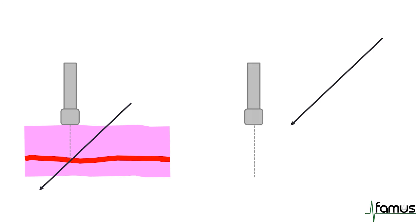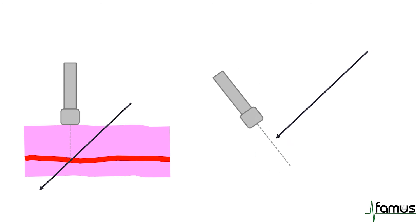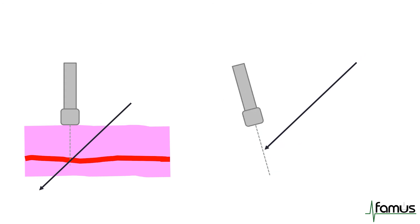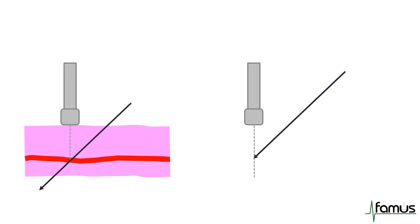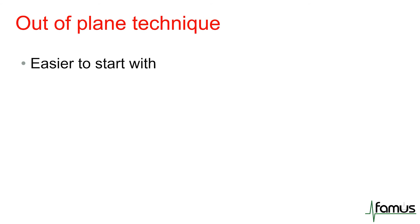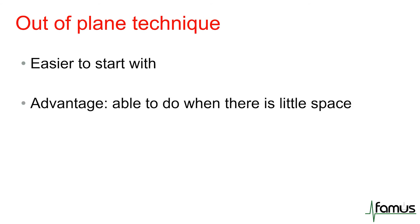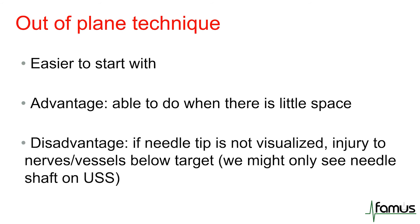The way you can mitigate this is to try and follow your needle through. You start with your needle as it pierces the skin and then tilt the probe so the beam of the ultrasound meets the needle on its way through. You then gradually rotate or tilt the probe and follow the needle as it passes into the target, which means you can't allow the needle to pass through the ultrasound beam and damage structures below. This technique takes a little more practice but certainly reduces the rate of complications once mastered. The out-of-plane technique is easier to start with, and the big advantage is that you're able to do it when there's very little space — which is usually the case for peripheral vascular access. The disadvantage is that if you don't visualize the needle tip on the way in, injury to nerves or vessels below your target can happen.